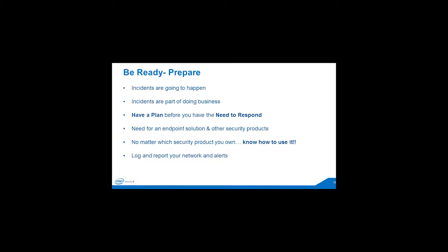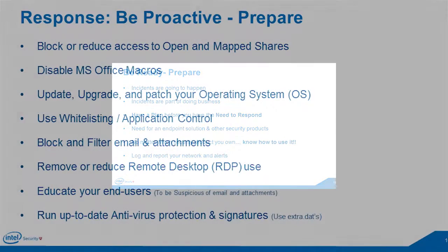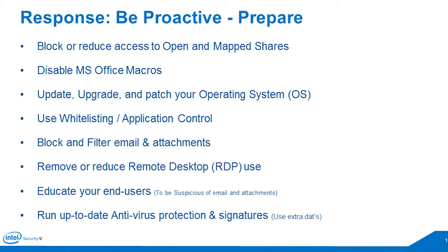Make sure logging goes to your centralized aggregation point — whether you have a SIEM — and that notifications are sent to the appropriate groups. Having open shares and mapped shares is great for sharing information, but it's also a great way for ransomware and crimeware to rapidly spread. The C$ and admin$ shares — do you need them? If not, reduce access or eliminate them. Mapped shares — does everybody need them? Reduce unauthenticated access and the number of mapped shares. Definitely segregate your data and don't put it all in one place.